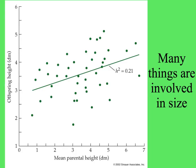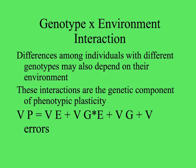In this graph, mean parental height is plotted on the x-axis against offspring height. You can see that there is some relationship, but the heritability is only 21%, because many things are involved in the size of individuals. It can also be that differences among individuals depend on the interaction of their genes with the environment.